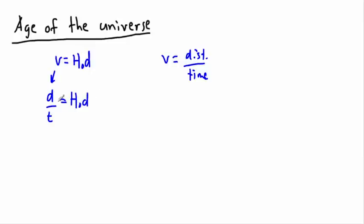So that means the d's disappear, so I have 1/t = H₀. Or conversely, if I want I can solve for t, so I can say therefore t = 1/H₀.